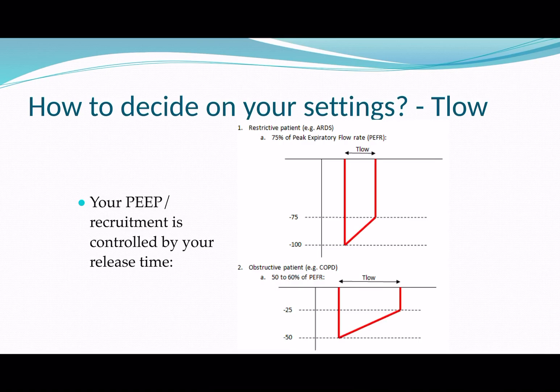Now, how do we set our T-low? Out of all the settings in APRV, this is probably the one that takes a little bit of time to calculate and get right, but it's really important that you do. If you set your T-low wrong, you can lose all of the benefits of APRV — and this is often the main mistake people make when putting patients on APRV and finding they're not responding to it. It's because they haven't set their T-low appropriately.